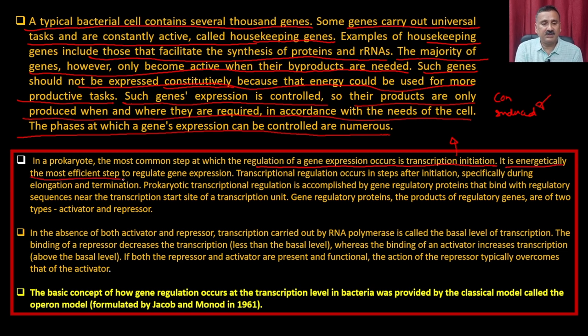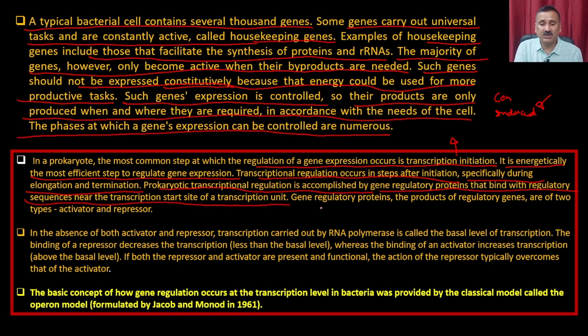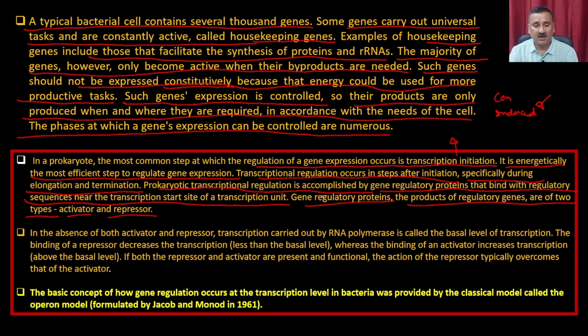It is energetically the most efficient step to regulate gene expression. Transcriptional regulation also occurs after initiation, specifically during elongation and termination. Prokaryotic transcriptional regulation is accomplished by gene-regulating proteins that bind to regulatory sequences near the transcriptional unit. The products of gene regulatory proteins are of two types: they can be activators or repressors.